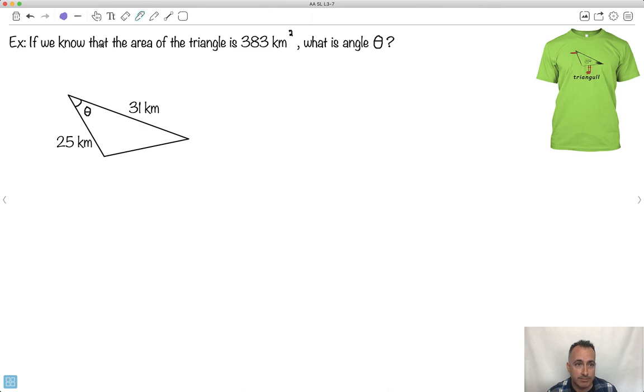Let's do an actual example. We know that the area of the triangle is 383 kilometers squared. What is the angle theta? Now this is just me being a little bit funny. I found this t-shirt, this triangle, which I thought was really clever. Do you notice I tried to make the triangle with the same shape as the triangle? Let's see if we can solve this. The whole idea is we know the area. So it's important to write down the equation for the area of a non-right angle triangle. It's one half a b sine c. The area is 383.